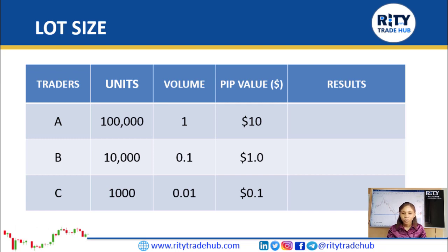Now let's look at the pip equivalent of each lot size. For a standard lot size, one pip is equal to ten dollars. For a mini lot size, one pip is equal to one dollar. For a micro lot size, one pip is equal to $0.10, and for a nano lot size, one pip is equal to $0.01.